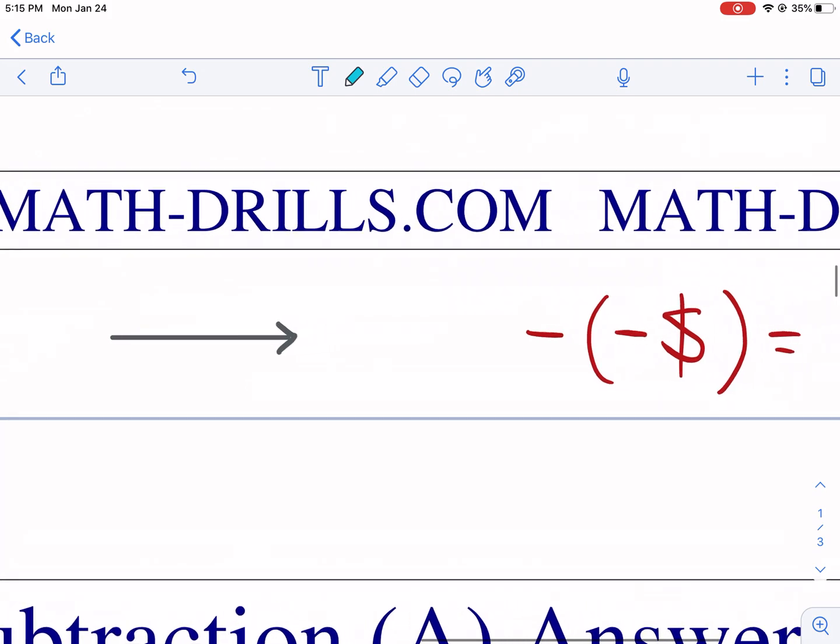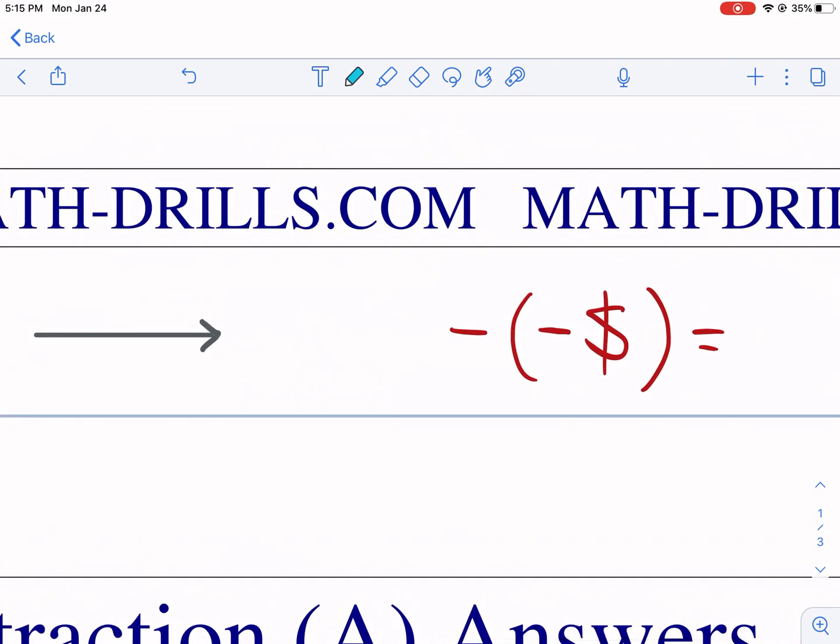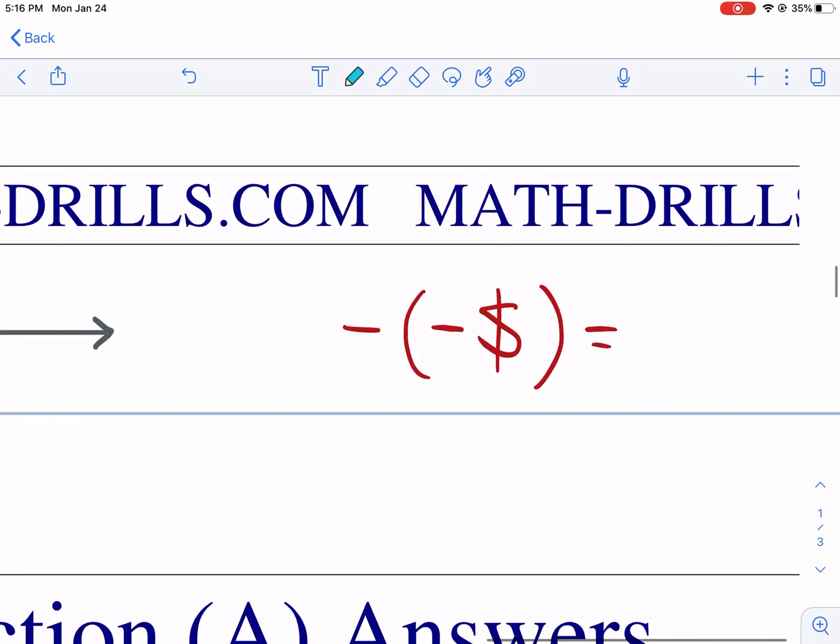And why is that? A good example of why that is a couple different ways. And it translates even to English with double negatives. Like I did not, not do the dishes means I did the dishes.